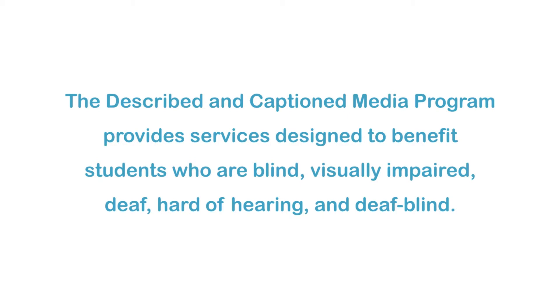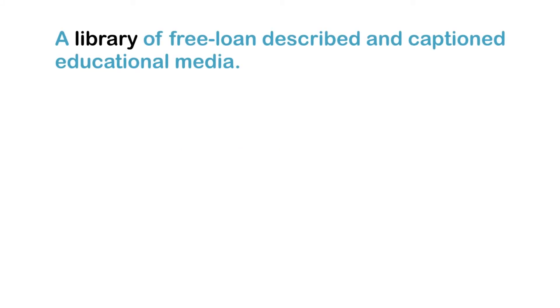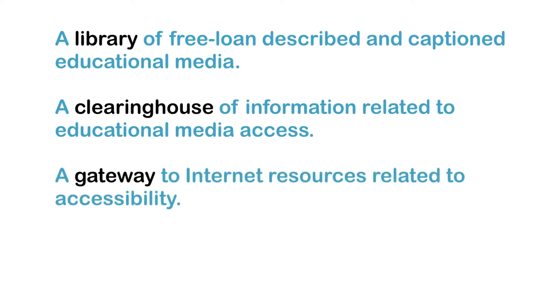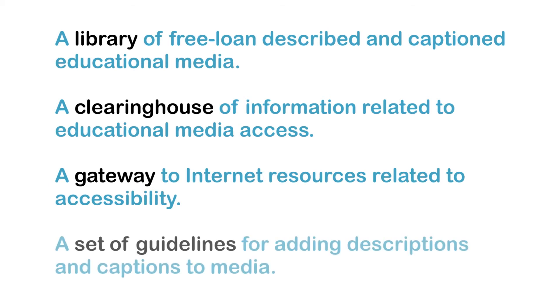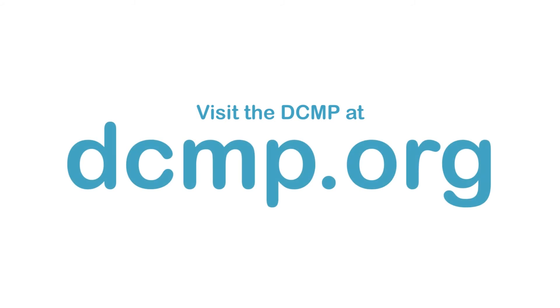The Described and Captioned Media Program provides services designed to benefit students who are blind, visually impaired, deaf, hard of hearing, and deafblind. These services include a library of free loan described and captioned educational media, a clearinghouse of information related to educational media access, a gateway to internet resources related to accessibility, and a set of guidelines for adding descriptions and captions to media. There are no user registration or service fees. Visit the DCMP at dcmp.org.